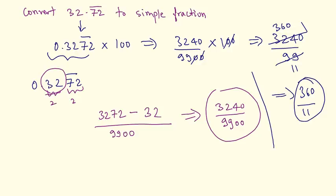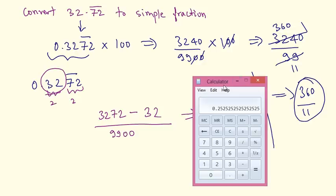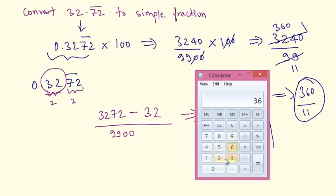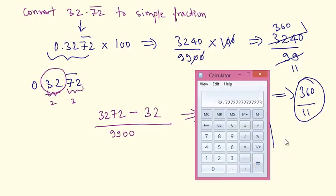Let's verify: 360 divided by 11 gives 32.72 recurring, which confirms our answer is correct.